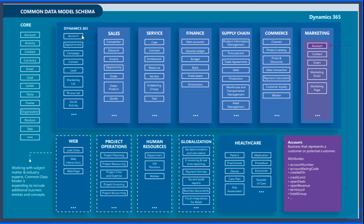Not only the tables — you can see that in accounts, attributes and columns are also defined, such as account number, account rating, credit limit, and relationships — everything is defined as part of CDM. You can refer to this schema or blueprint for your application development. Additionally, Microsoft is working with industry experts to identify the CDM for each industry. For healthcare, common tables include patient, medication, procedure, device, and care plan. Microsoft also has industry accelerators for education, non-profit, and banking.